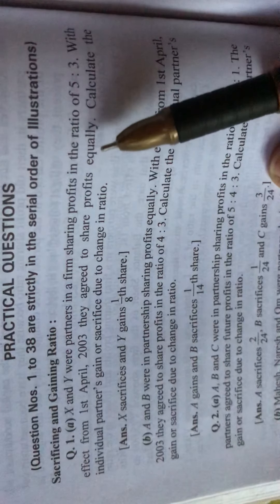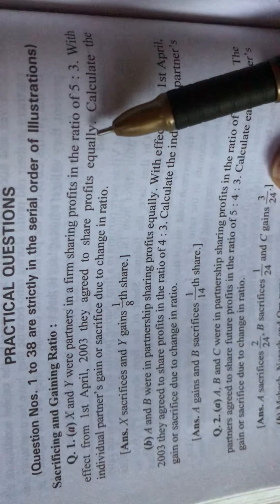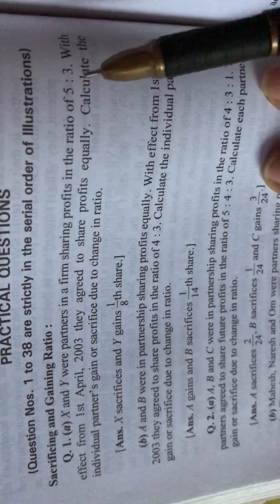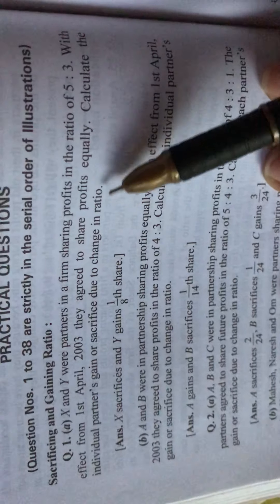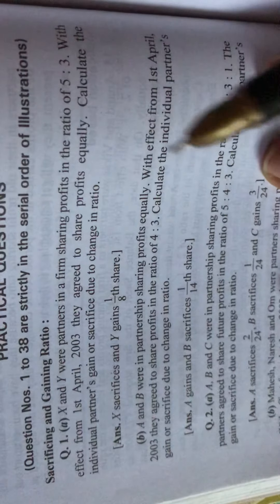So here the old ratio of X and Y was 5 to 3 and the new ratio is agreed to share equally, means 1 to 1. So now we will solve here. This is 1A.